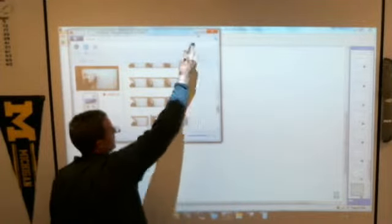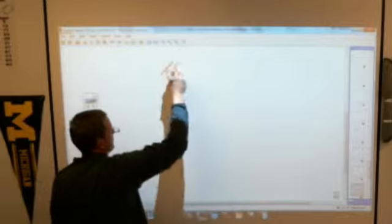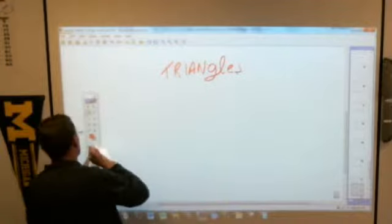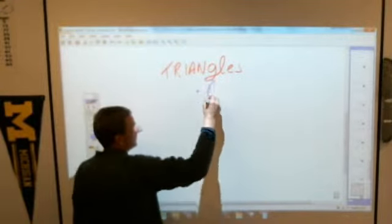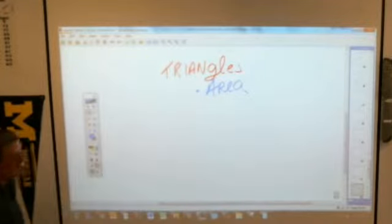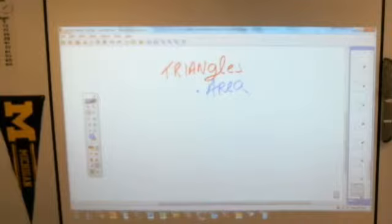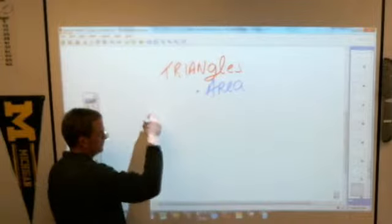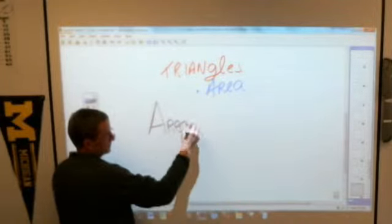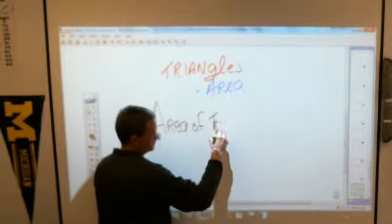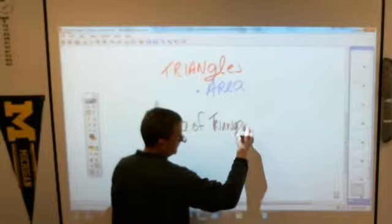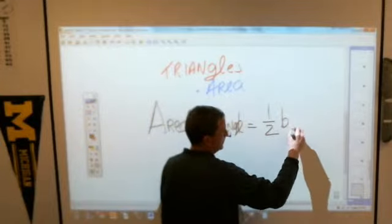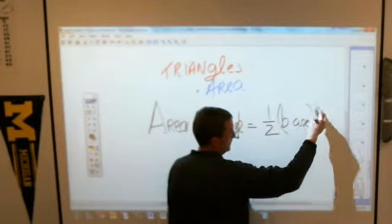On top right, triangles, and the little subheading on the bottom is the area of triangles. And in big ginormous letters, I want you to write this down, the area of a triangle equals one-half base times height.